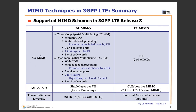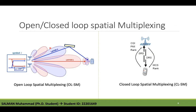Looking at SU-MIMO in the downlink, we have Closed-Loop Spatial Multiplexing (CLSM). Open-loop and closed-loop spatial multiplexing are the two operation modes of codebook precoding. These two modes differ in how the precoder matrix is selected by the network and made known to the terminal. In Open-Loop Spatial Multiplexing, two different information streams can be transmitted over two or more antennas, but there is no feedback from the UE, though TRI (Transmit Rank Indicator) can be used by the base station.